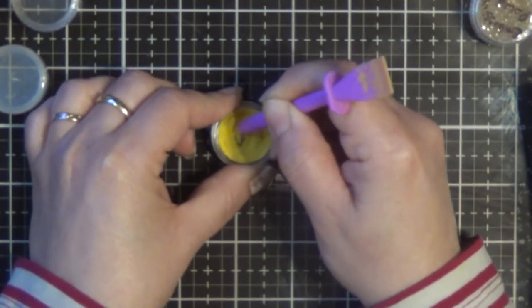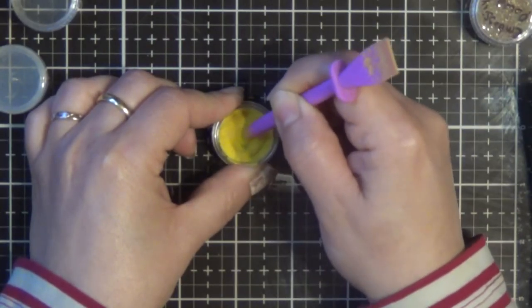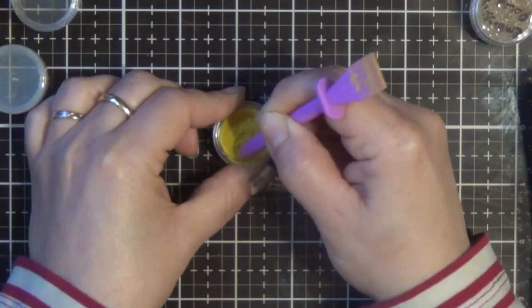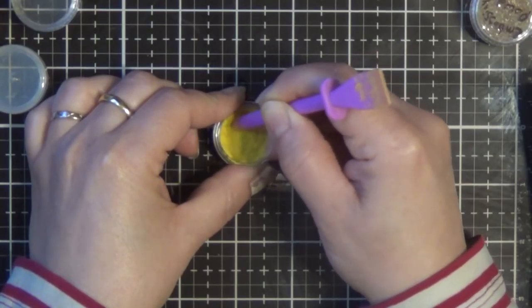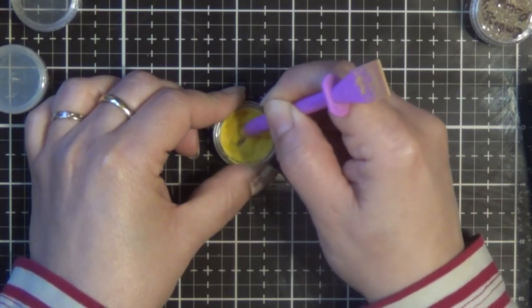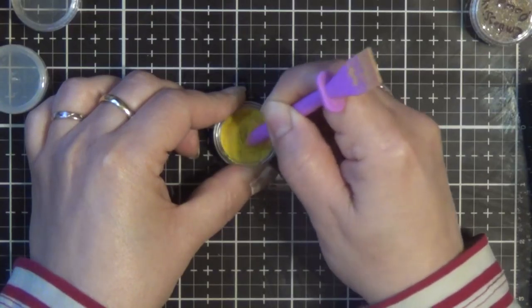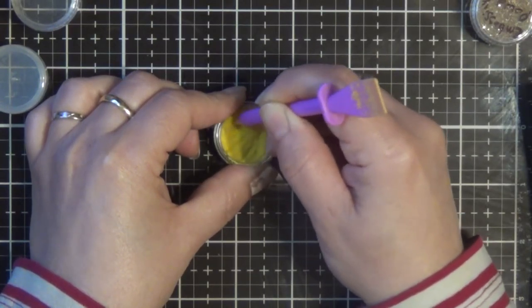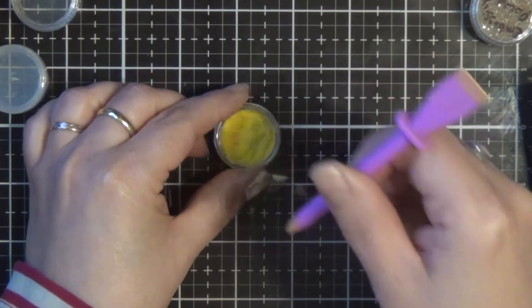So we have yellow. And of course because we doubled everything, doubled the embossing powder and the pigments, we're gonna get extra powder. And you don't need a lot so you don't need to mix up a lot unless you want to.